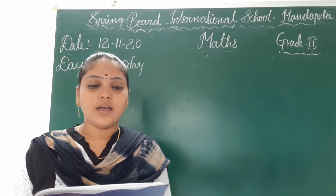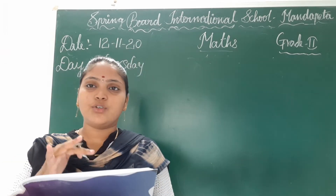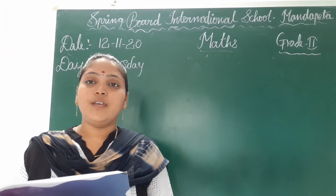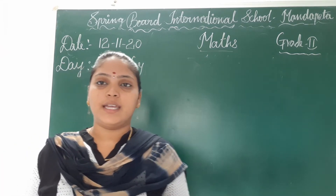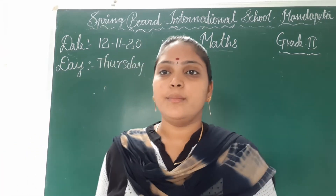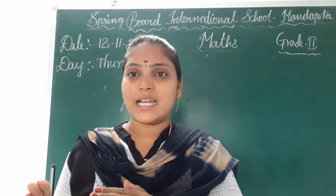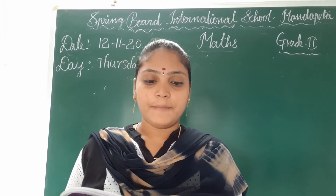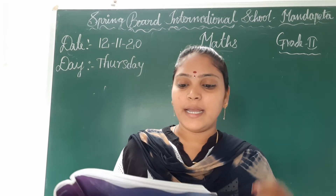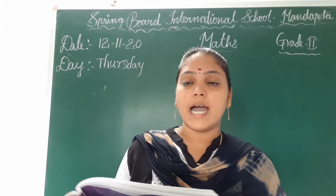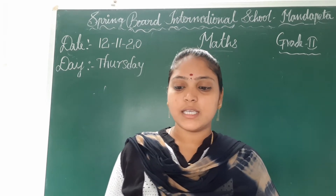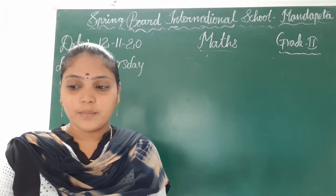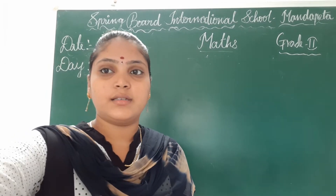Here, you have to find some objects in your house which measure exactly 1 kilogram. Then estimate the number of fruits or vegetables that you would need to have the same mass as the 1 kilogram object.